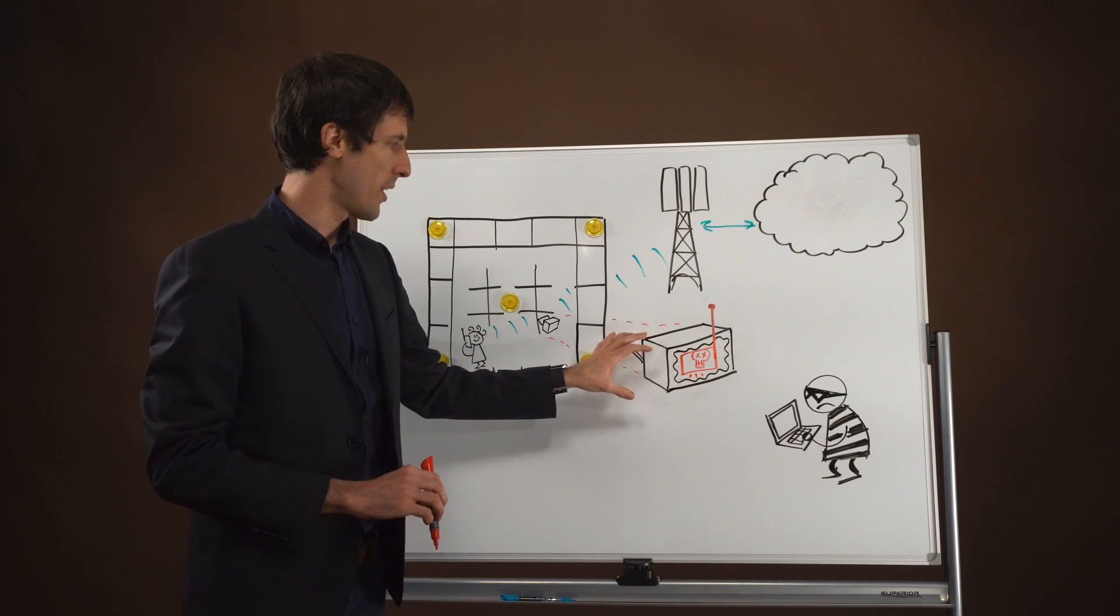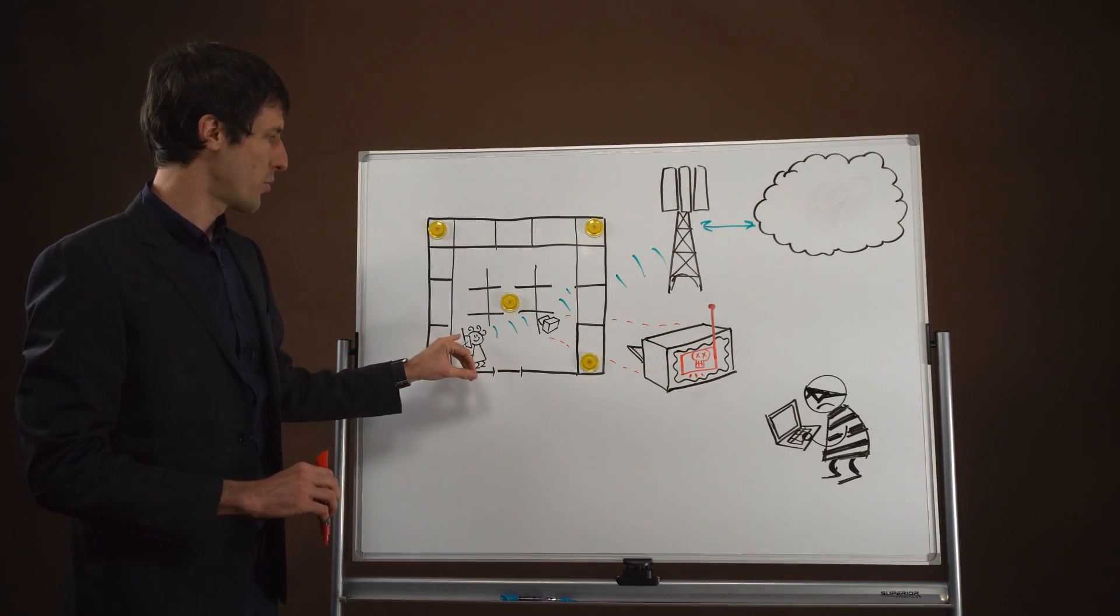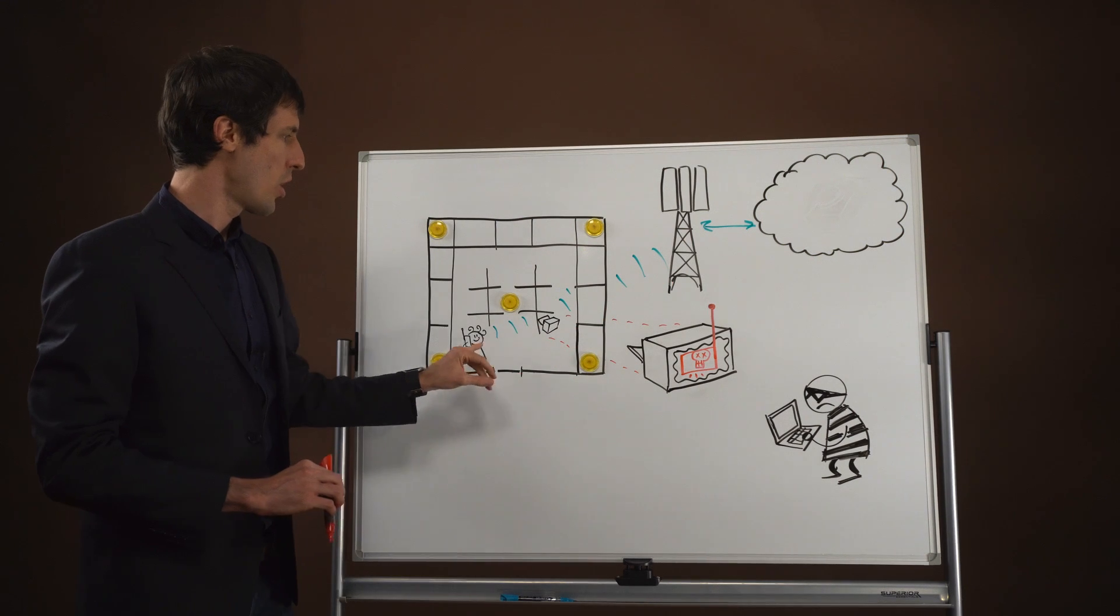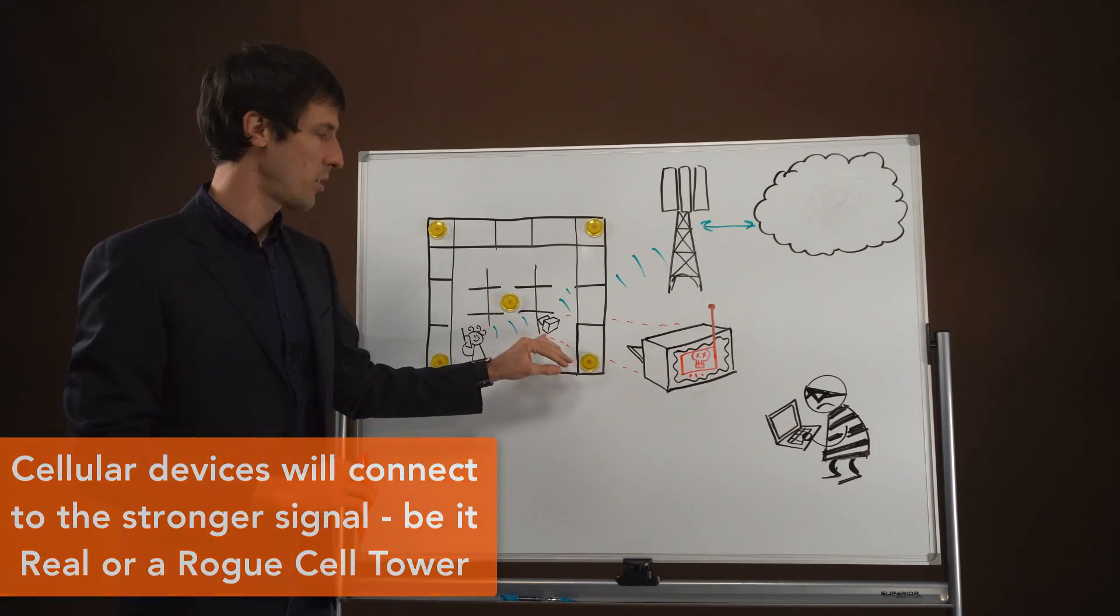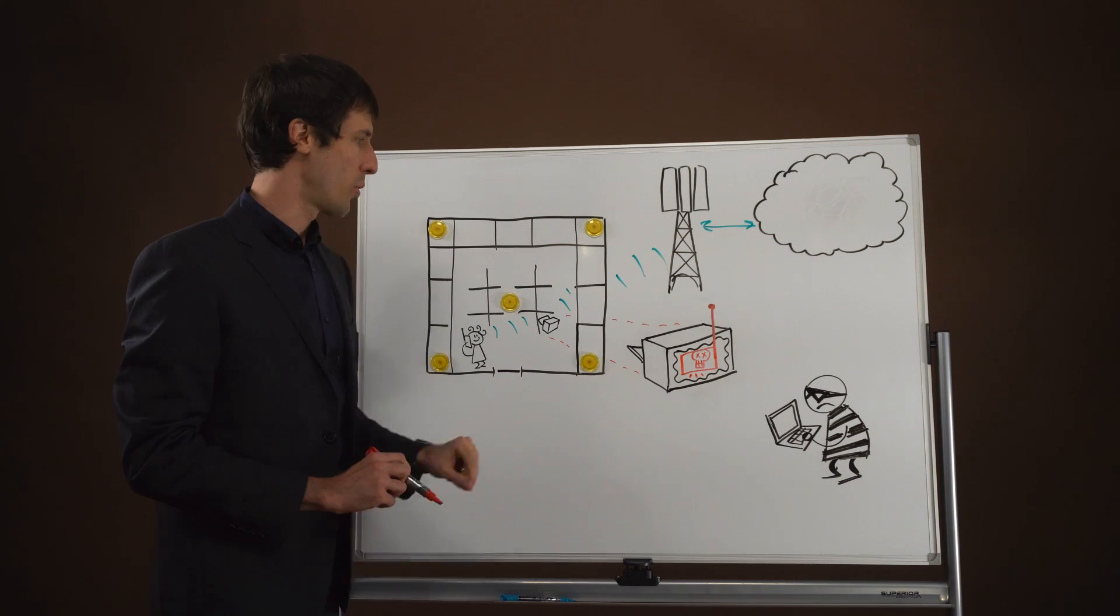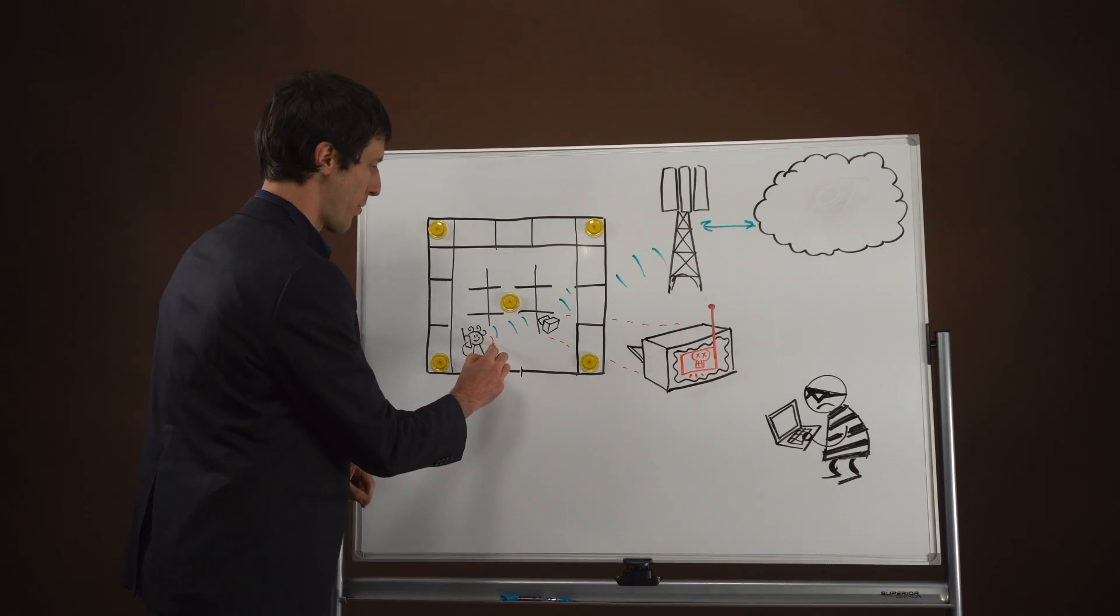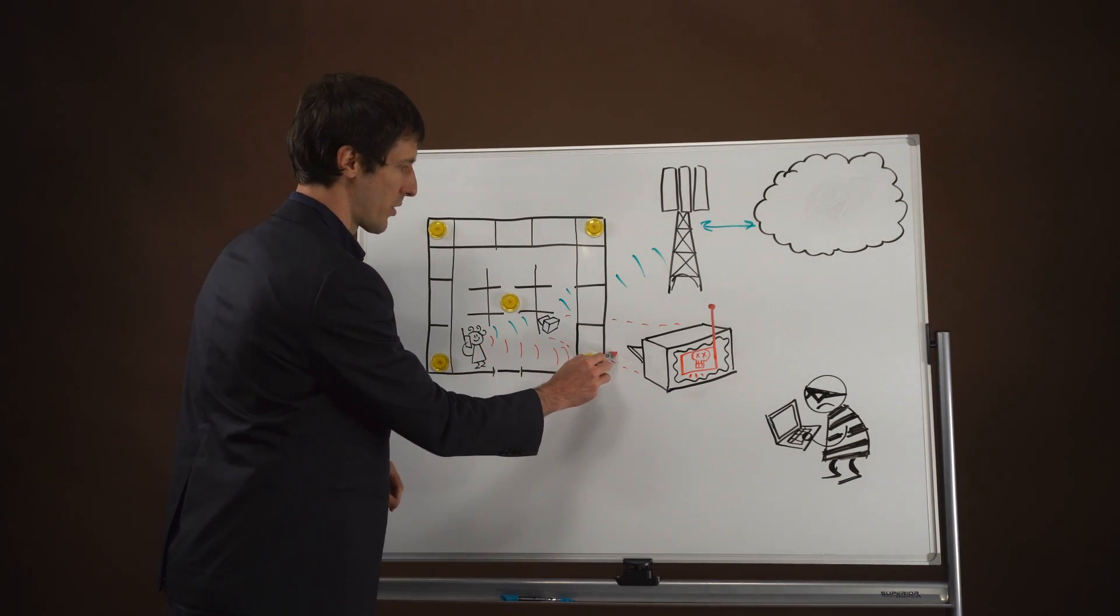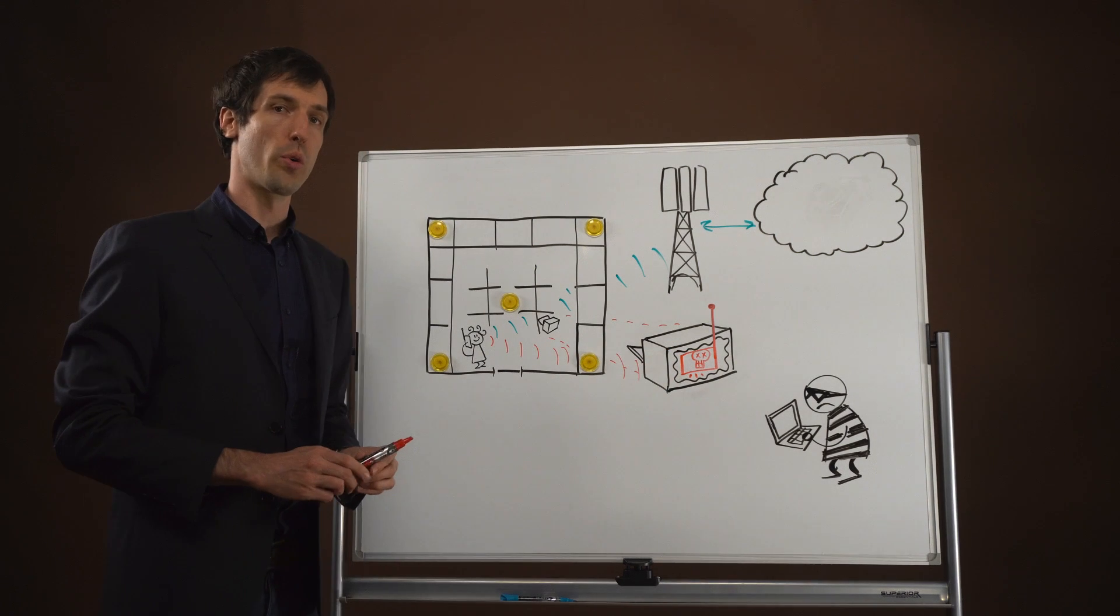What will happen then is cell phones in the area that are looking for that particular network will see that there's a stronger signal being emitted nearby. Instead of associating with the outside cell tower, phones may decide to associate with this rogue tower.